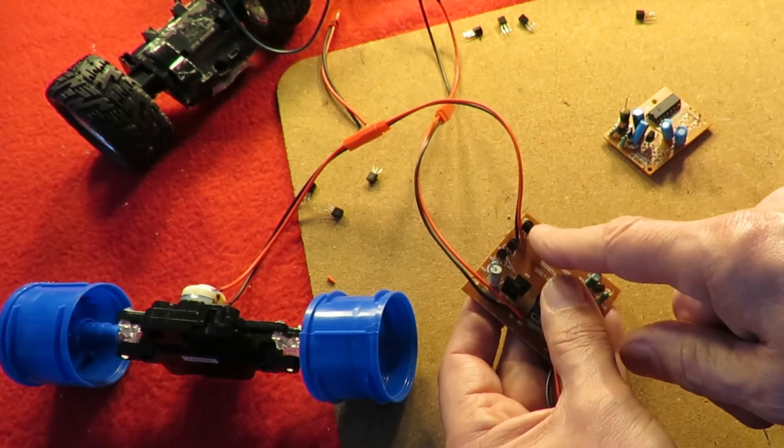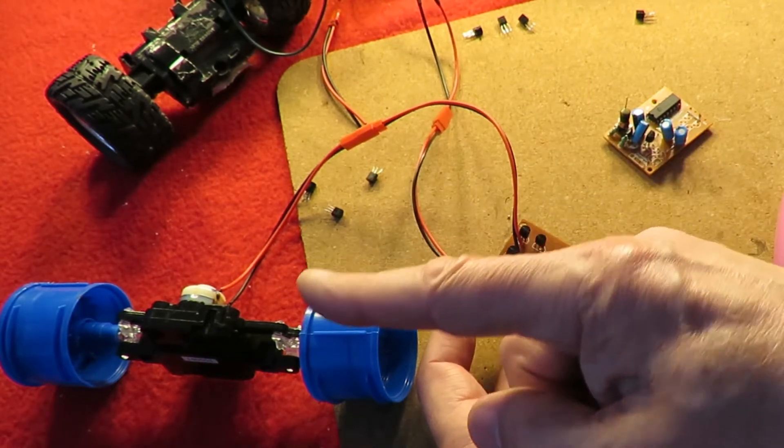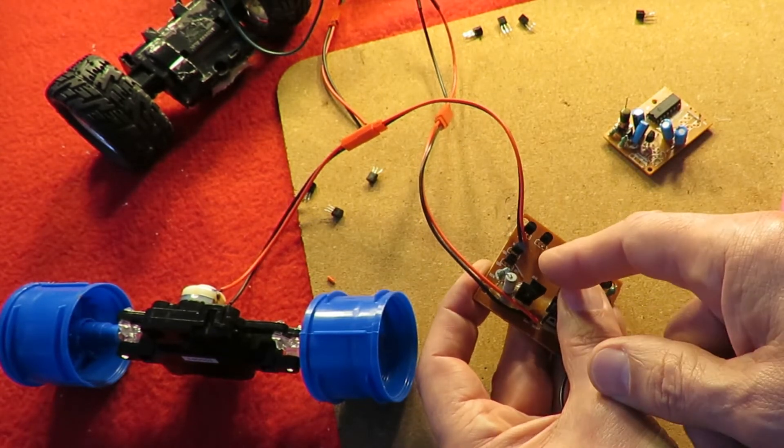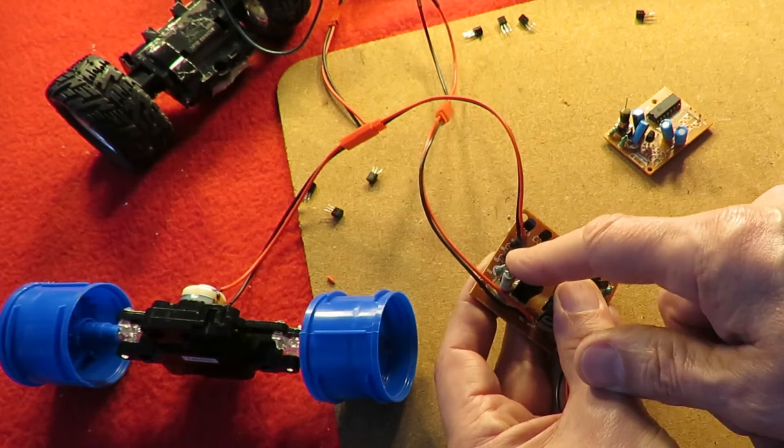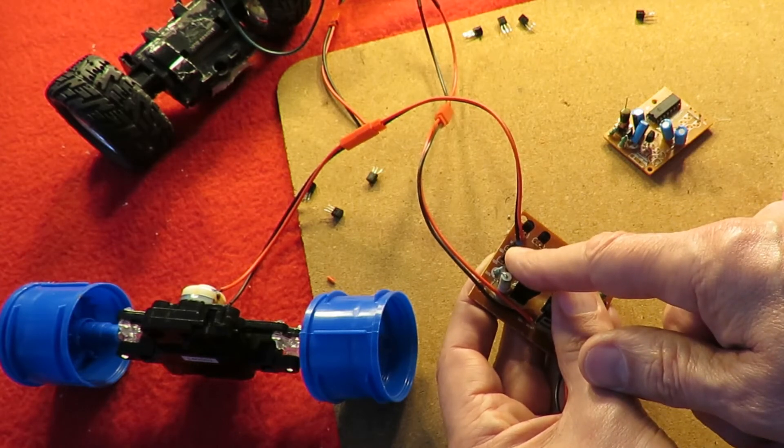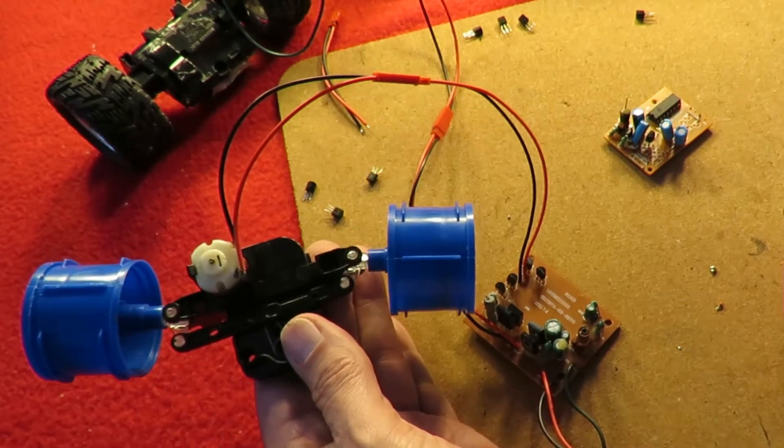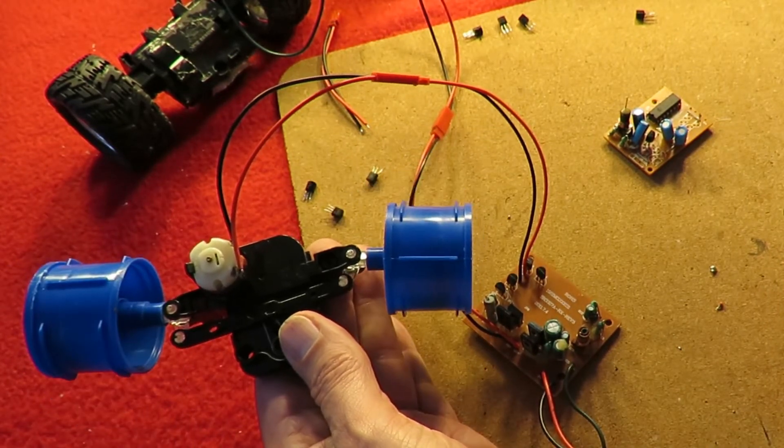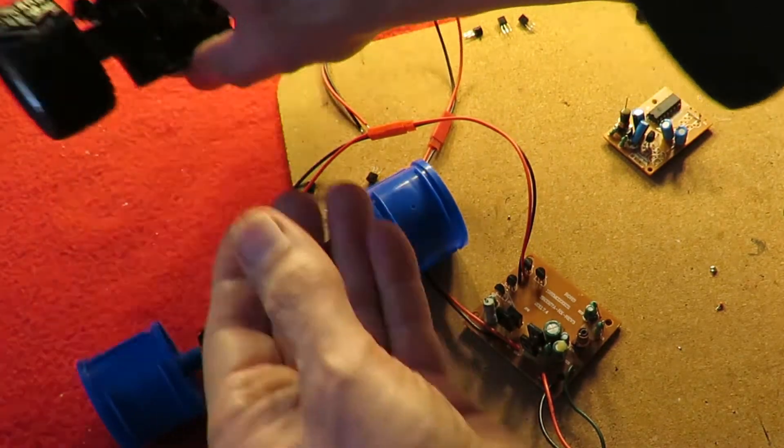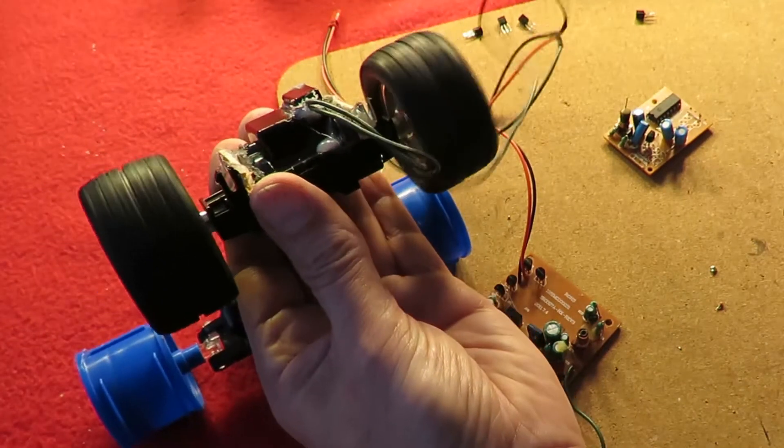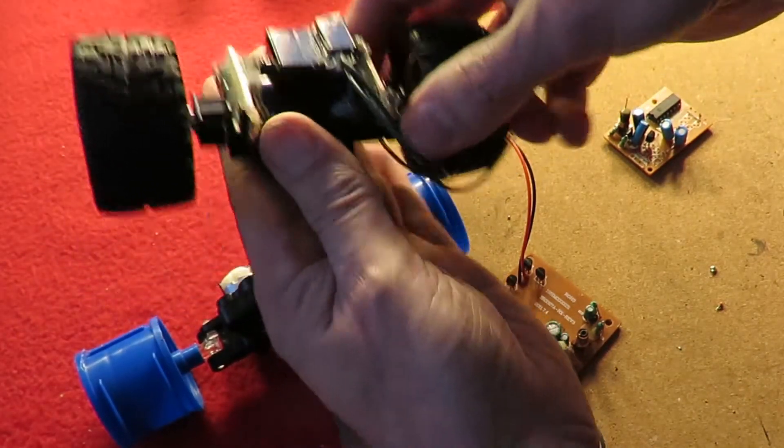So when I'd replaced them I found I'd got one way and not the other, so I then had to go through and replace two more of them so that we've now got steering and we've also got forwards and backwards.